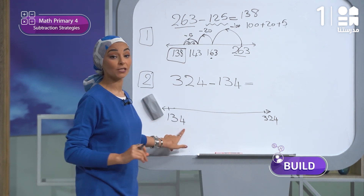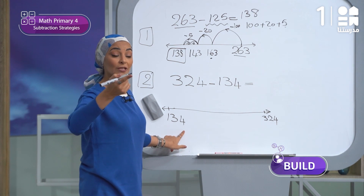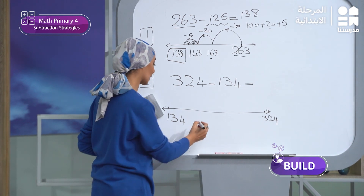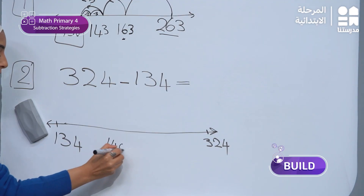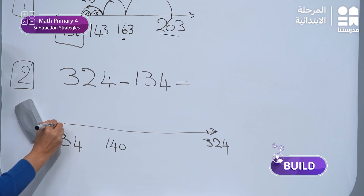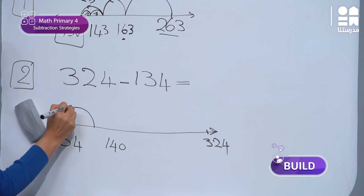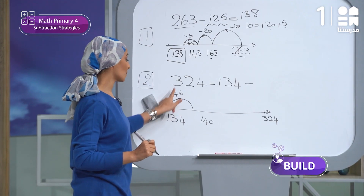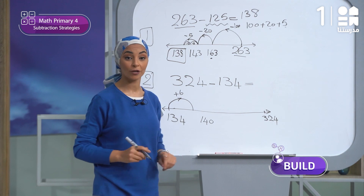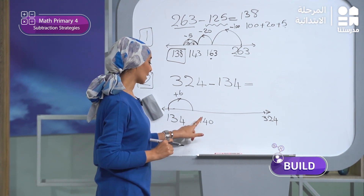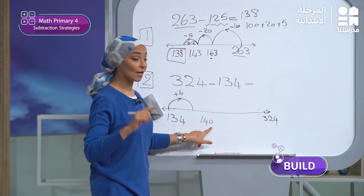I have 134. The first benchmark number I can see is 140. So what should I do? I will add only 6 to reach 140. I will jump 6. So 134 plus 6 gives me 140. This is the first benchmark.